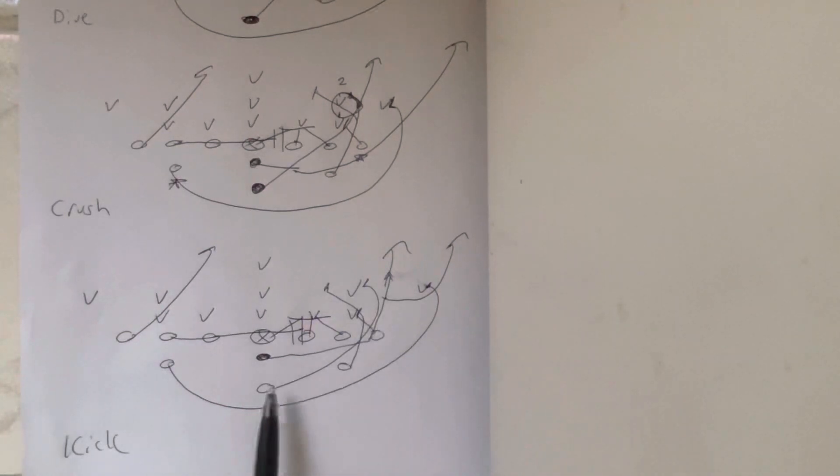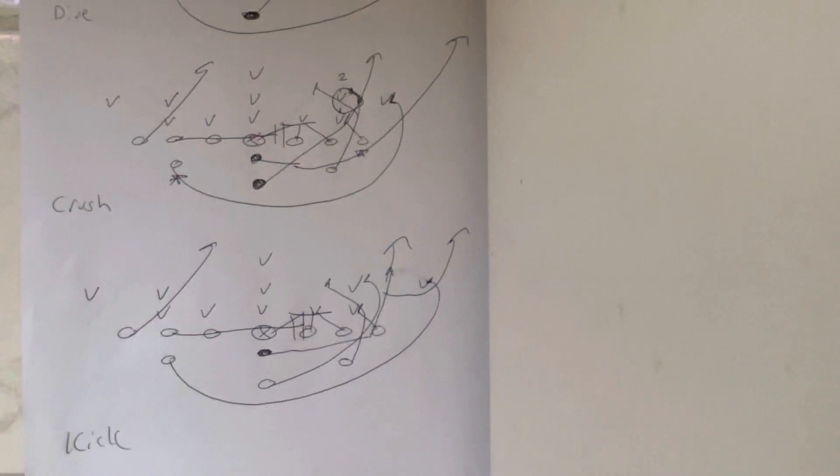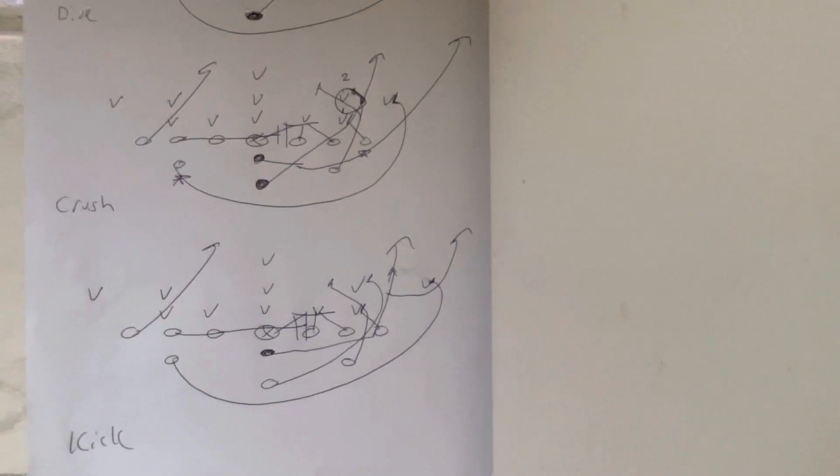So what happens is, B-back kicks number two, A-back runs the pitch and logs the corner, and then the quarterback takes off off the playside hip of the receiver. So the new triple threat: dive, crush, kick. And if you're looking to do this the right way the first time, give me a call.